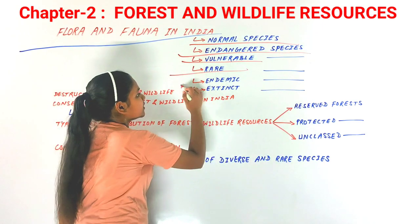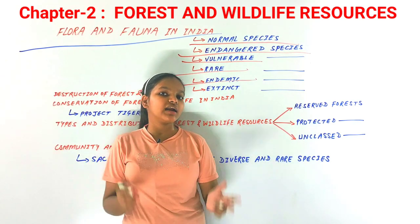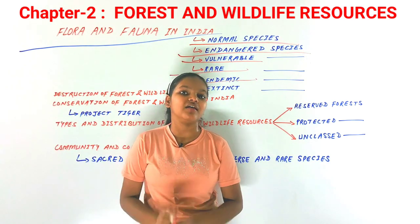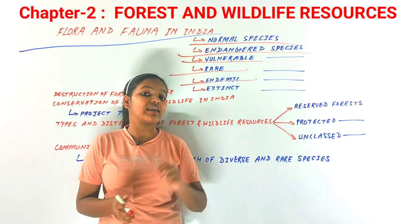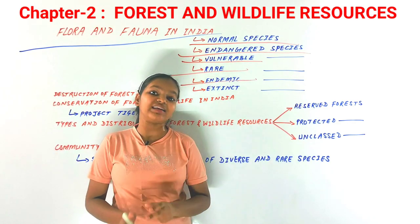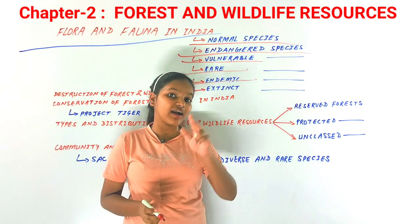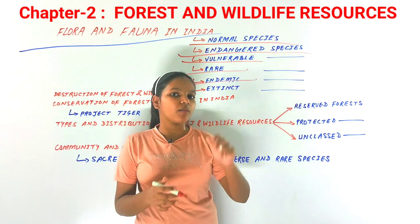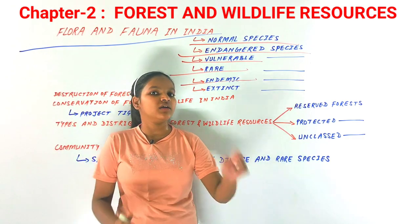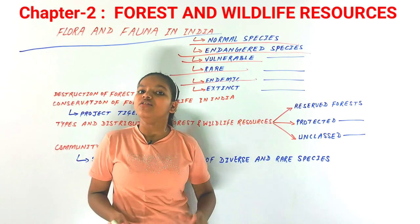Endemic Species are those found only in particular areas due to geographical or land boundaries. For example, the mithun is found in Arunachal Pradesh, and in the Andaman and Nicobar Islands you can find many unique bird varieties. These are species that are restricted to specific regions within our country.